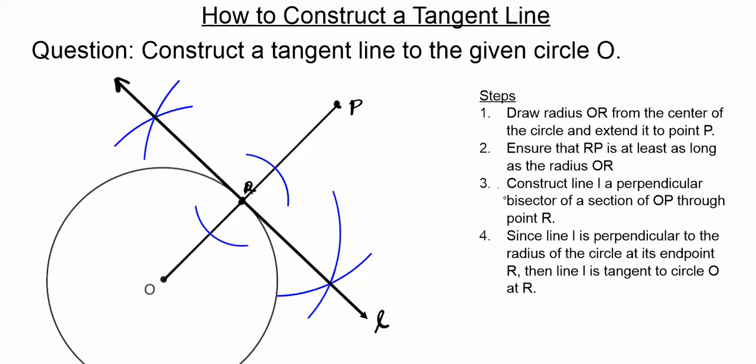In step three, we construct the perpendicular bisector of a segment of OP through point R. In this construction here, I drew this section of OP centered at R, and I constructed the perpendicular bisector of this segment right here through point R.